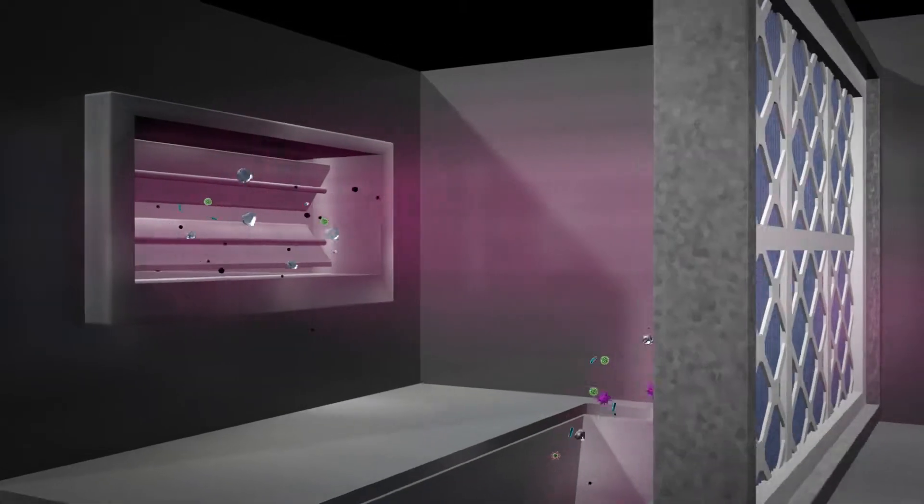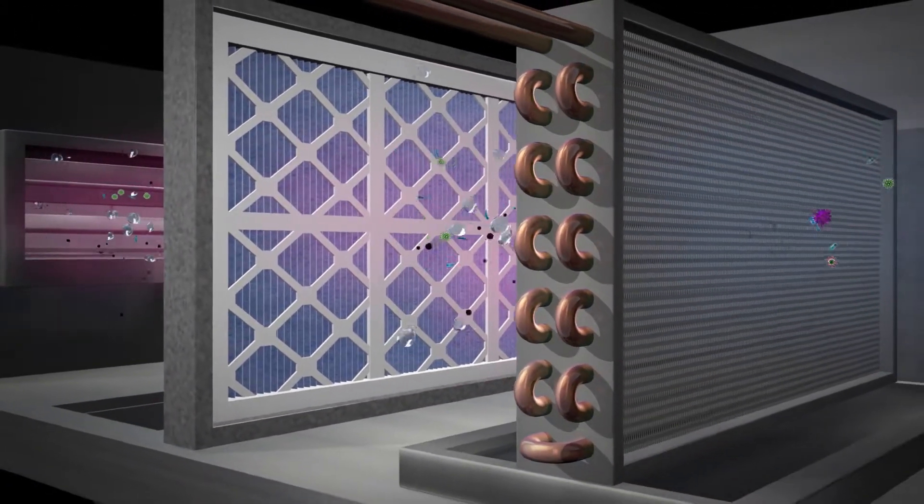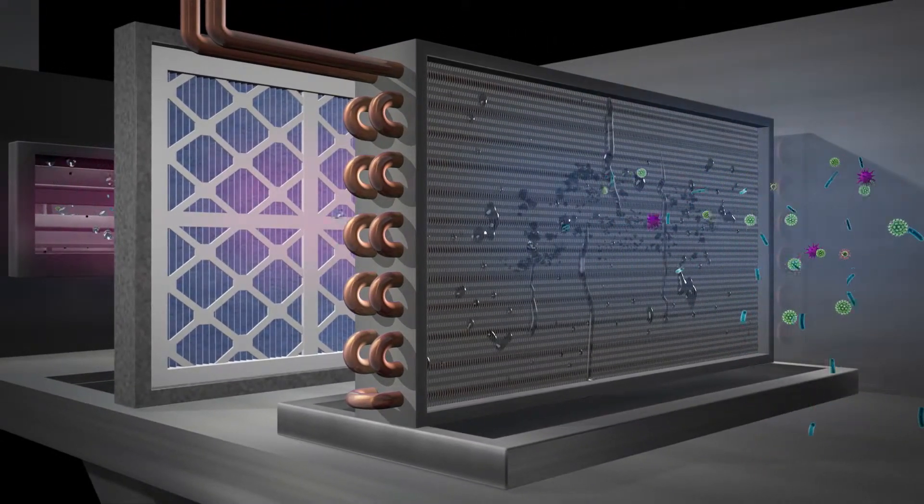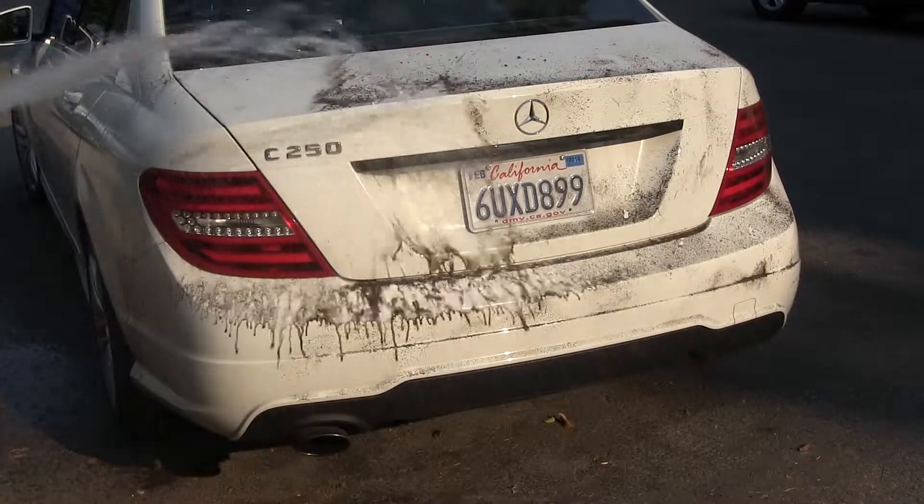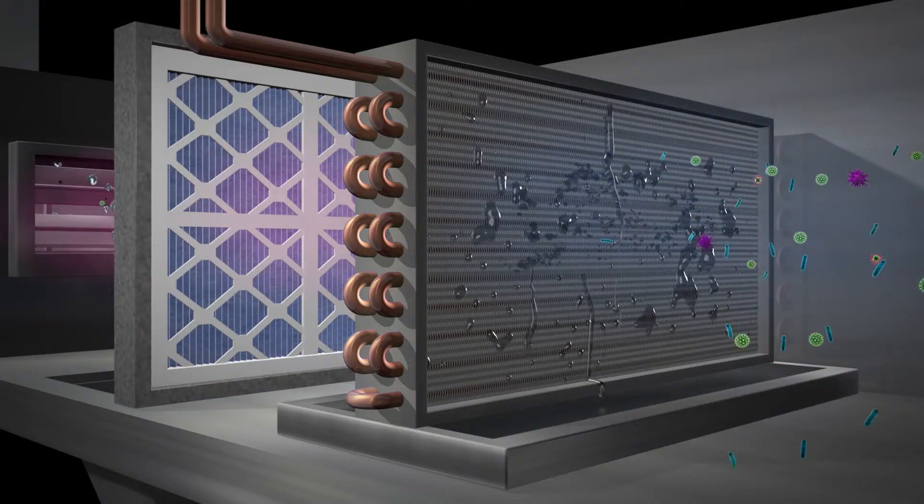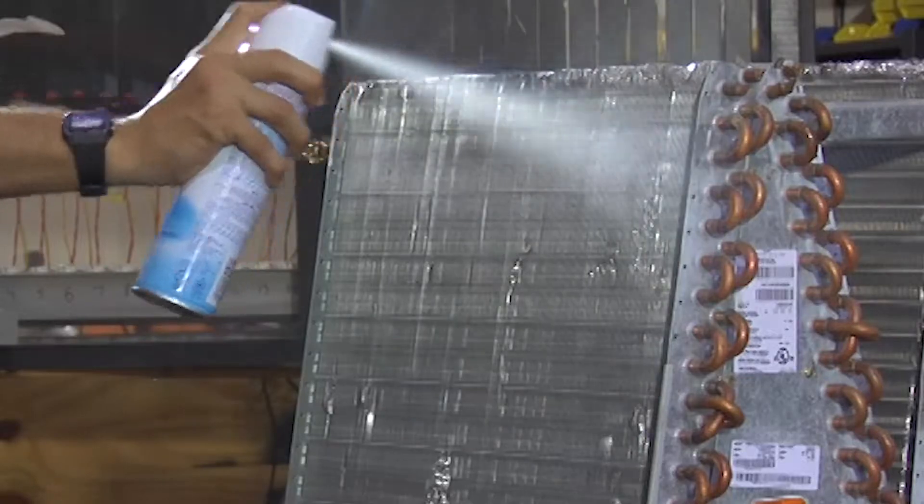When particulates pass through the primary filters and settle on the coil, we should expect the condensate that is produced when the warm air meets the cold coil to wash the particulates down into the drain pan, as easily as one washes mud off a car. But the dust stays on the coil and often requires harmful chemicals to remove it.